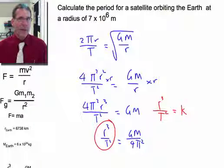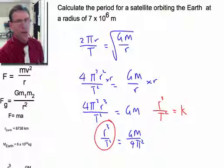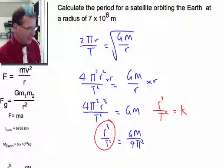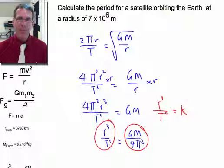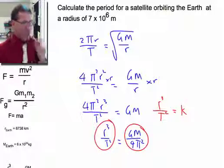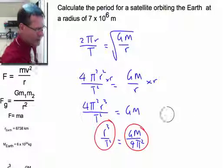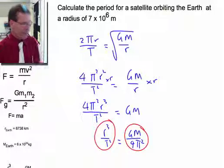So for all of the planets around the sun or all of the satellites around the planet, the R cubed on T squared, that ratio is always a constant. And here we go. We see in Newton that that is in fact a constant. Big G is a constant. Big M, the mass of the central body is constant for a certain thing like the sun. And pi, 4 pi squared is a constant.